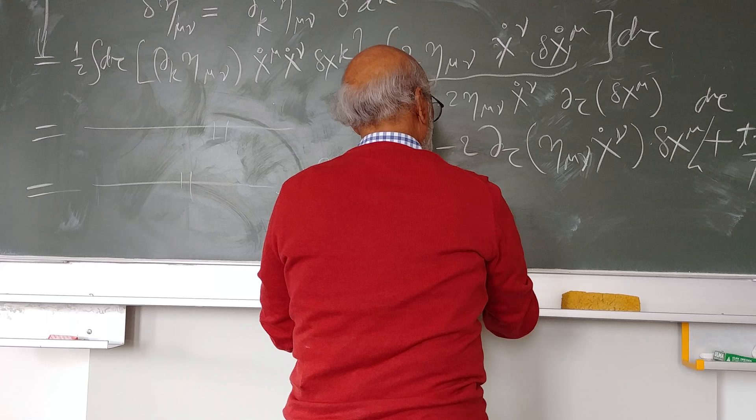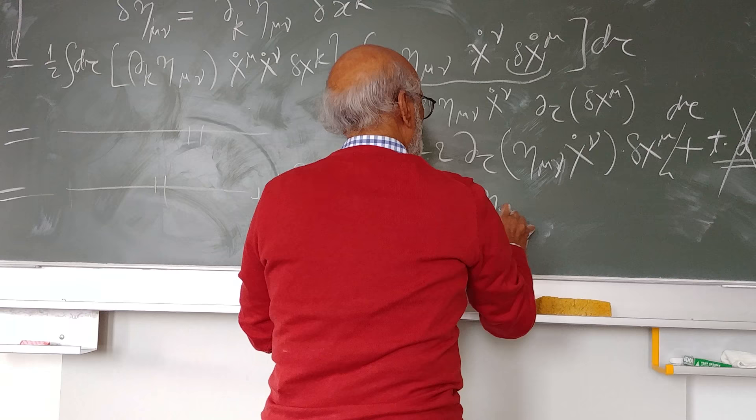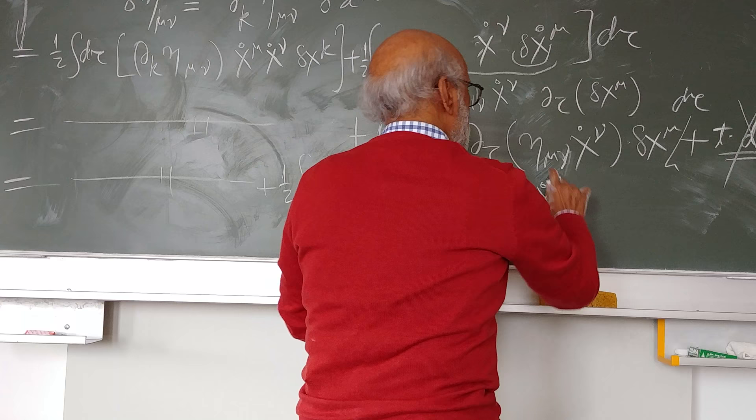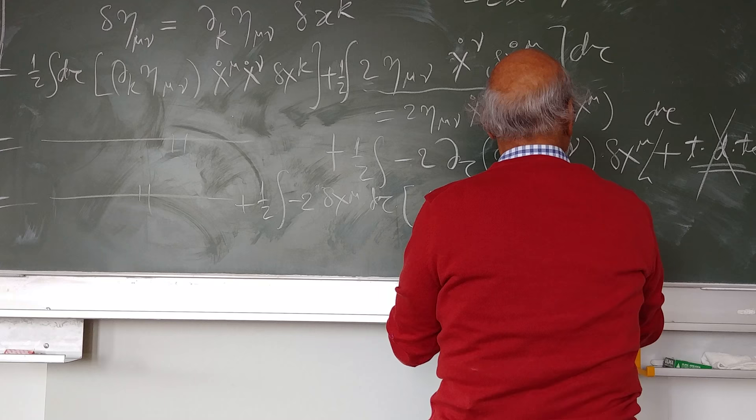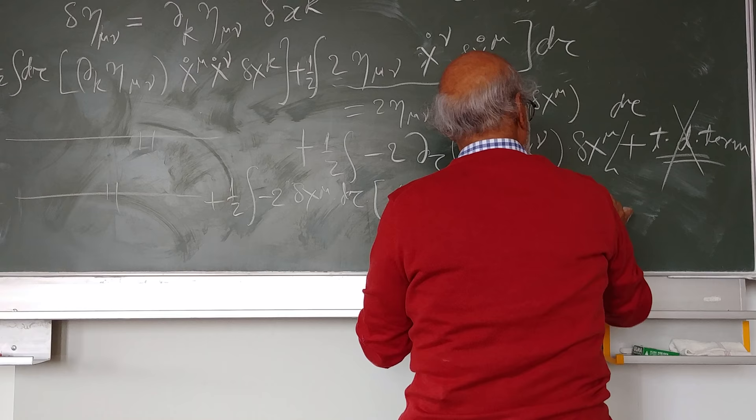Delta tau of eta mu nu times x nu dot plus delta of x nu dot, so this is x nu double dot.